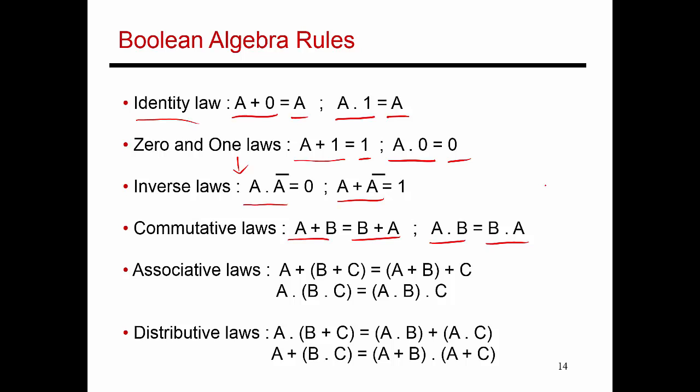These operators are also associative. That means it doesn't really matter in which order you perform the operations. If you're doing an OR of three terms, you can do the OR of B plus C and then OR that result with A. Or you can take the OR of A and B and OR that result with C.